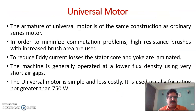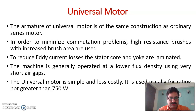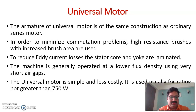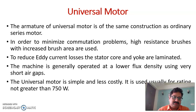The armature of universal motors is of the same construction as an ordinary series motor. To minimize the commutation problem, high-resistance brushes with increased brush area are used. For reduction of eddy current losses, the stator core and yoke are laminated. This machine is generally operated at lower flux density with very short air gaps.